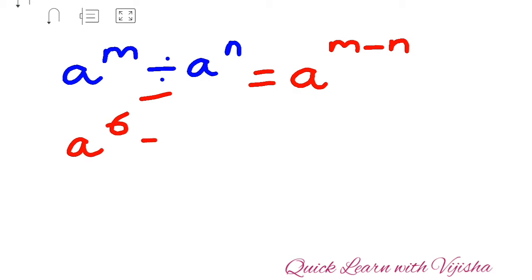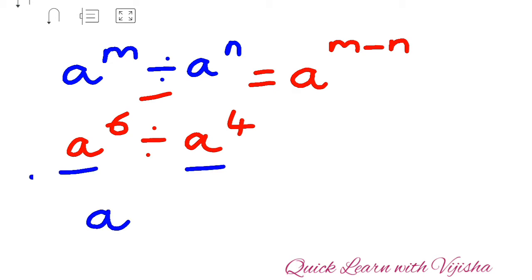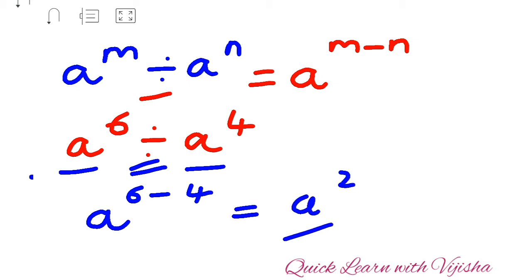Let's see one example to make this clear. The question is: a raised to 6 divided by a raised to 4. First we check — the bases are the same, so we write base a. Since it is division, the indices get subtracted: 6 minus 4. Your answer is a raised to (6 − 4), which equals a raised to 2.